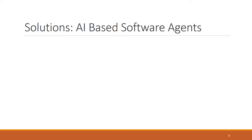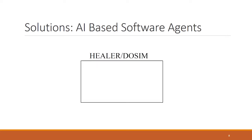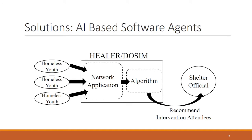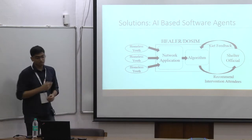We want to maximize the number of people who receive HIV information. The solution we propose is to build AI-based software agents with two components. There's a network application that interacts with homeless youth and constructs a social network. This network is fed into our algorithms, the workhorse inside our agents, which then recommend which homeless youth should be selected as peer leaders. The shelter official conducts the intervention, provides feedback about new friendship information, and this goes around in a loop — recommending more intervention attendees and getting more feedback.